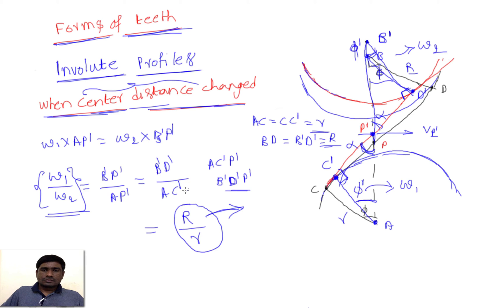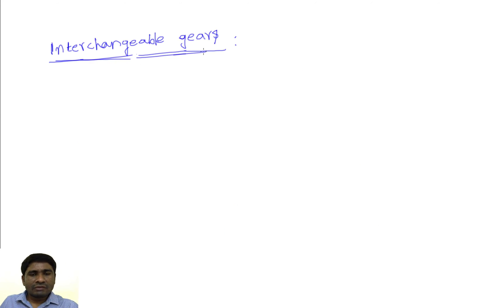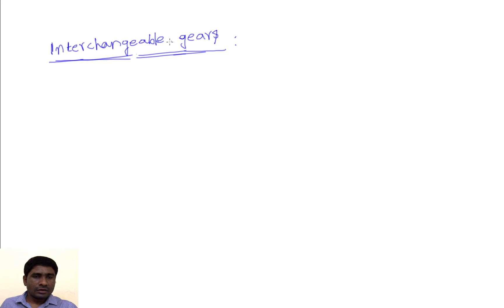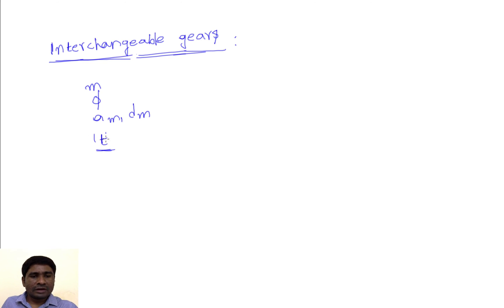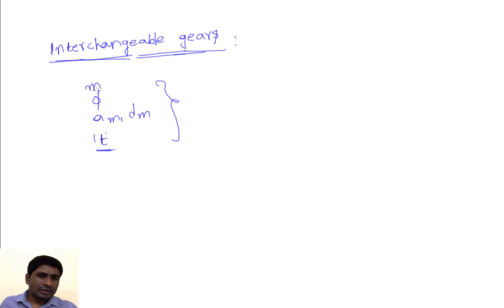This satisfies the law of gearing. From this we can conclude that a small change in center distance is allowed in the case of the involute profile. We have seen different types of gear profiles. When you want to replace one gear, we need to follow standardization. Whenever gears have the same module, the same pressure angle, the same addendum, dedendum, and tooth thickness — whenever these four parameters are the same — those gears can be easily interchangeable.